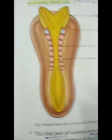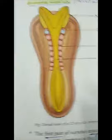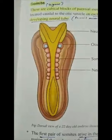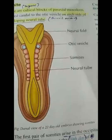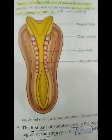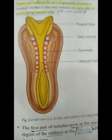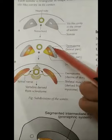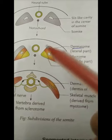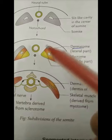The first somite appears on the 20th day in the occipital region. Embryo age is determined by the number of somites. The somite has three parts: dermatome (dermis of the skin), myotome (skeletal muscle), and sclerotome (ribs and vertebrae).